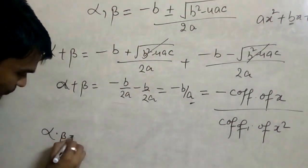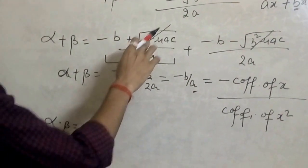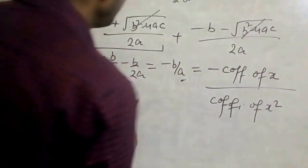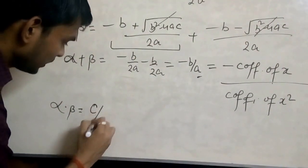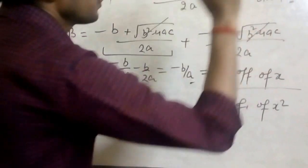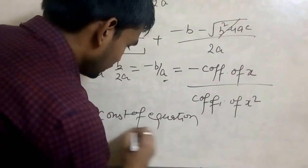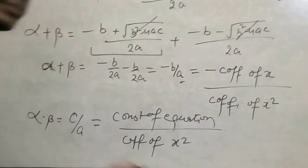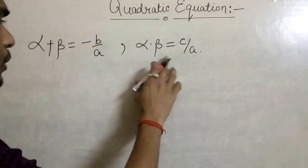After that, we find α·β. Multiplying (−b + √(b²−4ac)) / 2a by (−b − √(b²−4ac)) / 2a gives α·β = c/a. Here c is the constant of this equation divided by a, the coefficient of x². So we now know: α + β = −b/a and α·β = c/a.